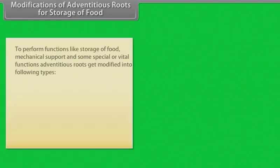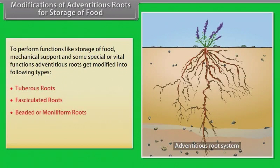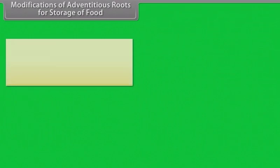Modifications of adventitious roots for storage of food: To perform functions like storage of food, mechanical support, and some special or vital functions, adventitious roots get modified into the following types: tuberous roots, fasciculated roots, beaded or moniliform roots, nodulated roots, and annulated roots.